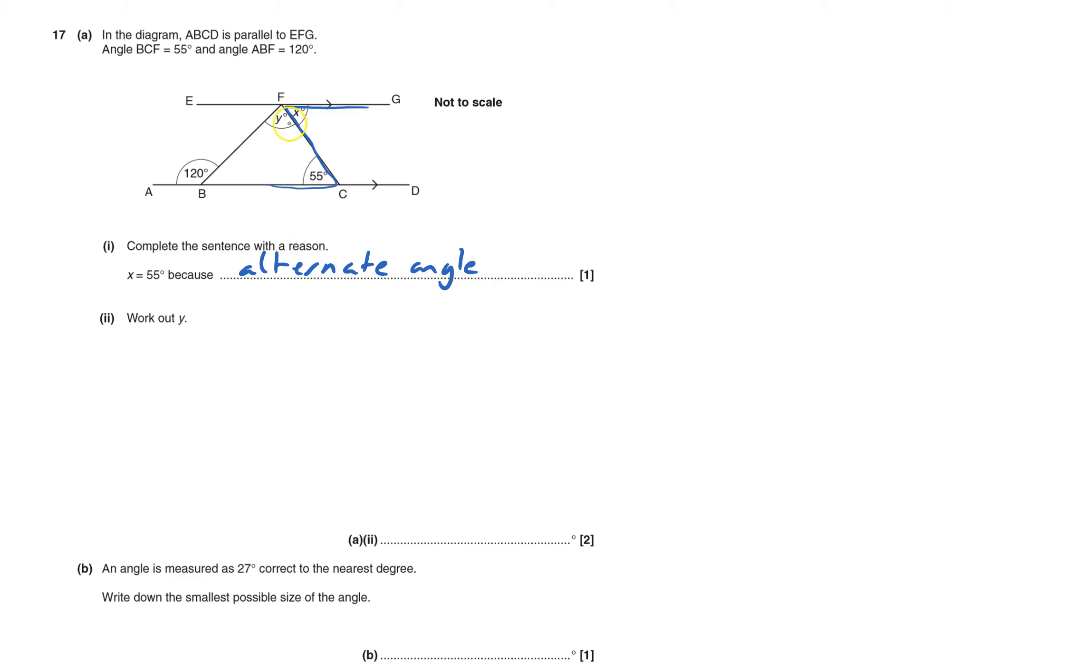Work out Y. So I've got to work out this one. There are several ways of doing this. I think I would probably work out the size of this angle here first. And that's a straight line, and so that angle there is 60 degrees. It doesn't have to give angle reasons, so that's 60 degrees. And now I've got a triangle.